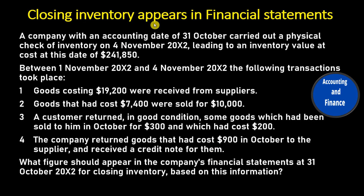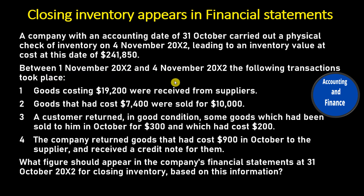Closing inventory appears in financial statements. A company with an accounting date of 31 October carried out a physical check of inventory on 4 November 20X2, leading to an inventory value at cost at this date of $241,850. Between 1 November 20X2 and 4 November 20X2, the following transactions took place.